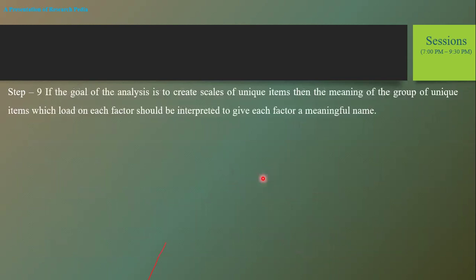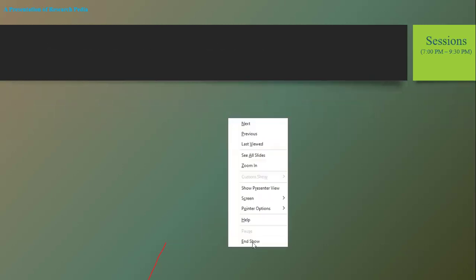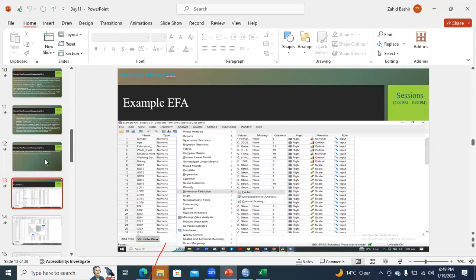Step nine, the last step in the EFA procedure: if the goal of analysis is to create a scale of unique items, then the meaning of the group of unique items which load on each factor should be interpreted to give each factor a meaningful name. After validating the scale through EFA, you need to provide a meaningful name to that scale. This is how we apply the EFA procedure during analysis.